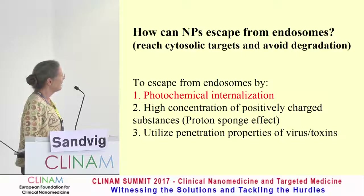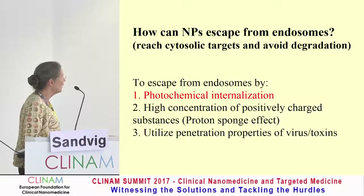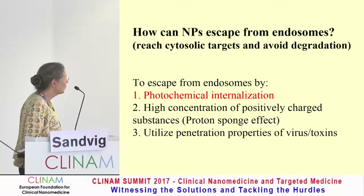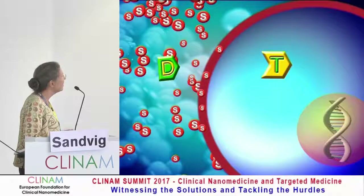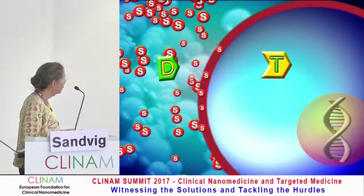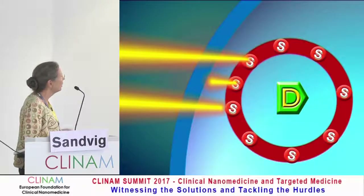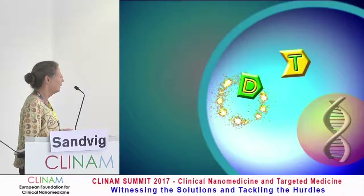How can particles escape from lysosomes? There are many suggestions, but not everything seems very efficient, especially not in vivo. I will show one example: photochemical internalization, involving porphyrins and light. The principle is that you have a drug, a photosensitizer, and the target inside. The drug is taken up by endocytosis, then you shine light on the vesicle and the cell, which leads to disruption of the membrane, release of the drug, and it may find its target.